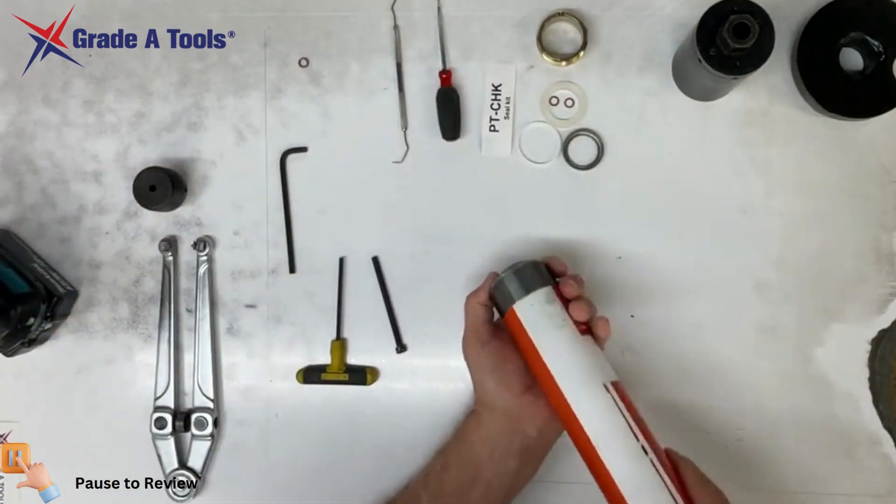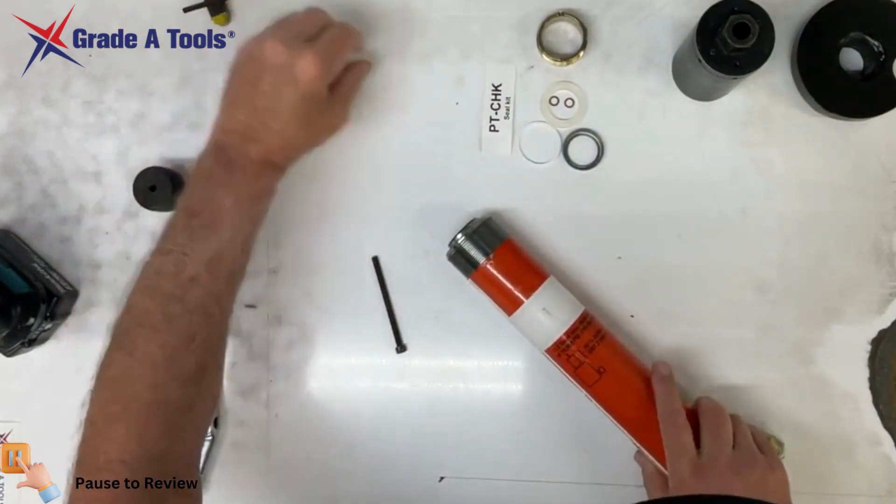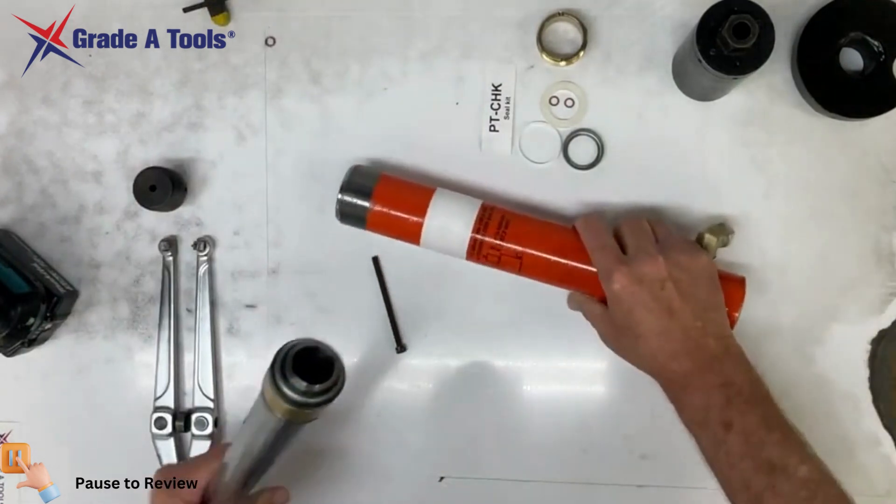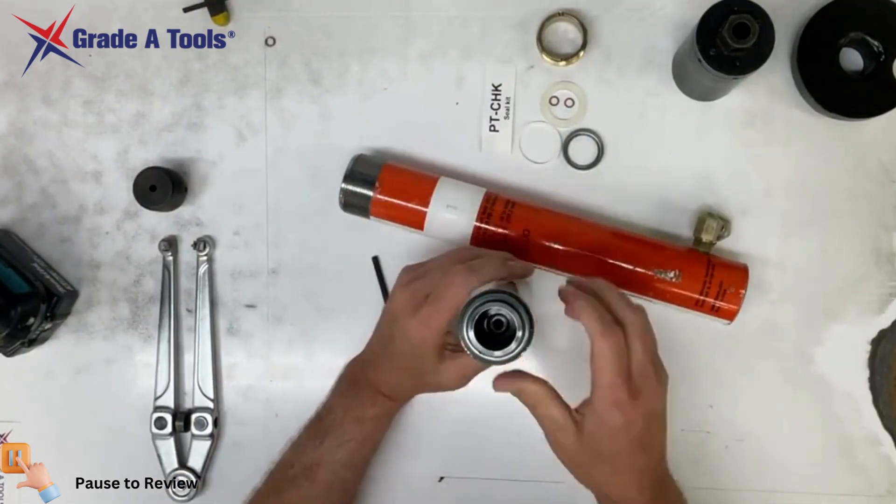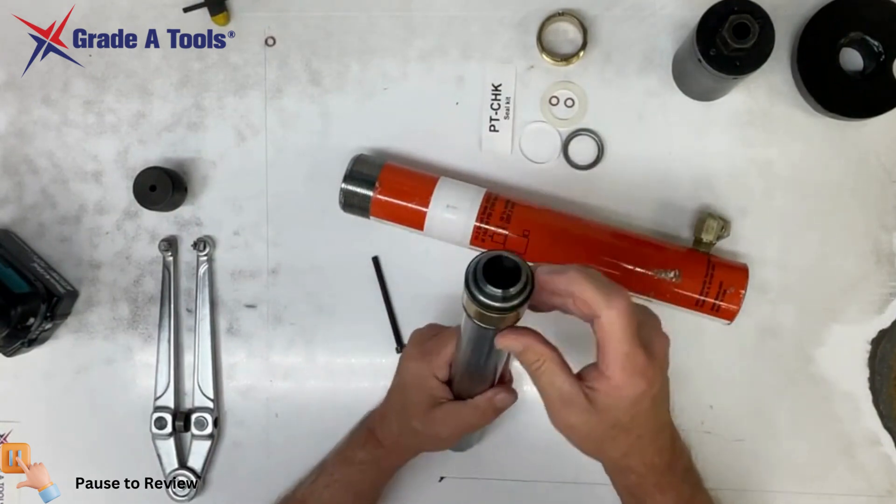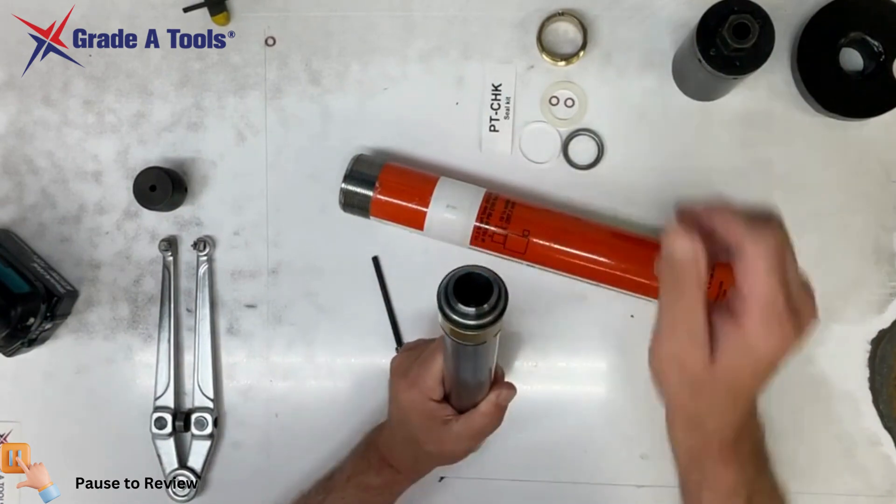Then we will take the ram and pull the ram out. You can see that the ram has our retaining ring, our steel U cup, and our seal.